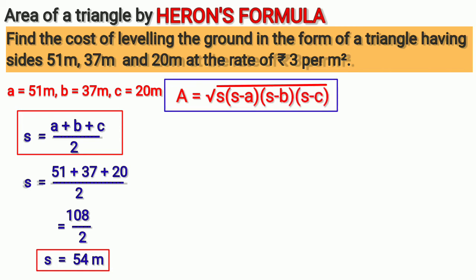Let us substitute values of s and a, b, c in this formula. We have area of triangle equals square root of 54 × (54 - 51) × (54 - 37) × (54 - 20).